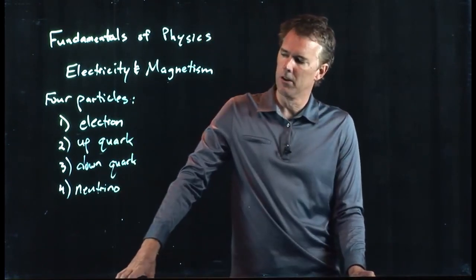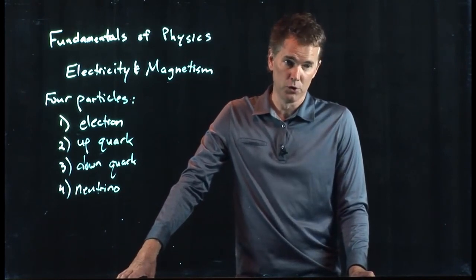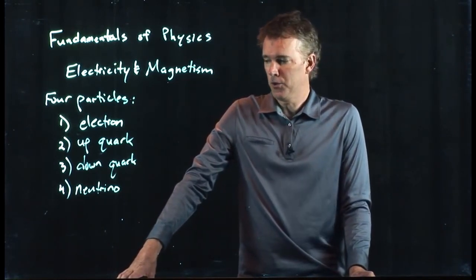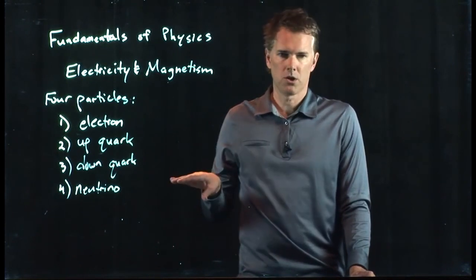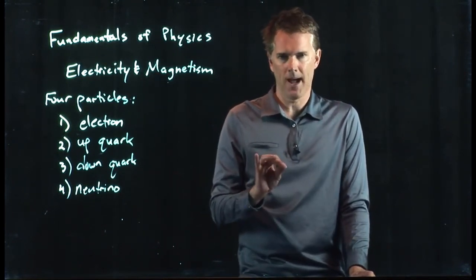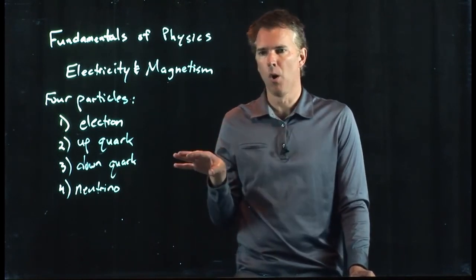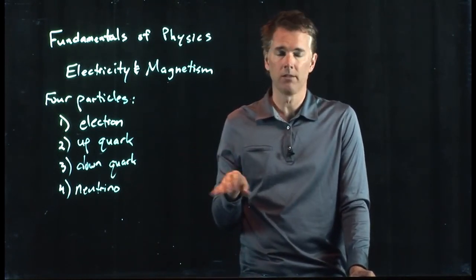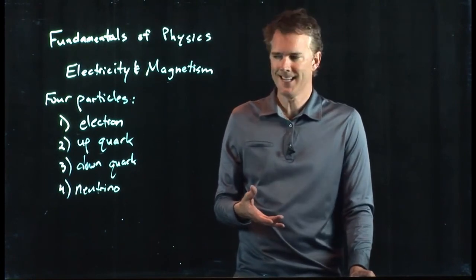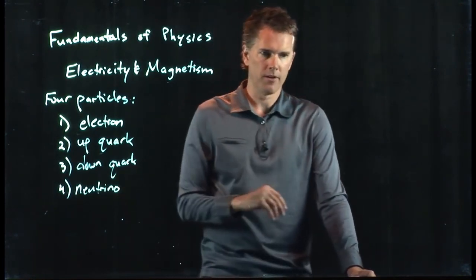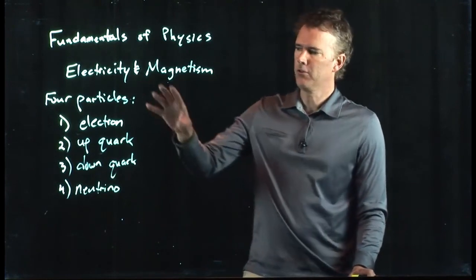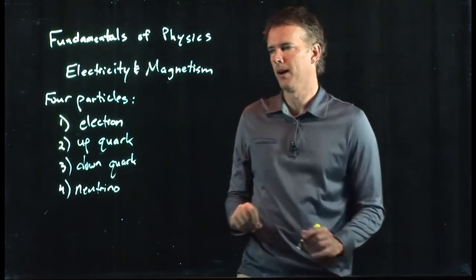And then the last guy on the list is the neutrino, the little neutron. And the neutrino is zero charge, nearly zero mass, zips around the universe at the speed of light, goes through almost everything without leaving a trace, very hard to detect. It was predicted theoretically and then verified experimentally. Okay, so those are the four particles that you need to worry about.